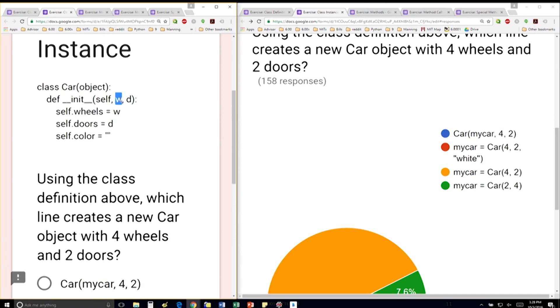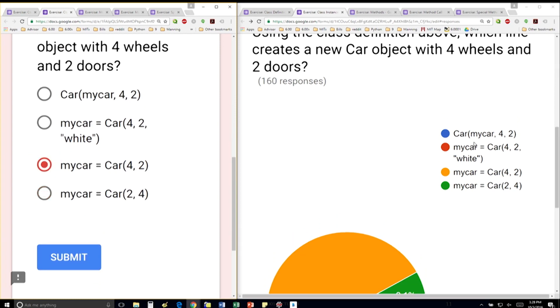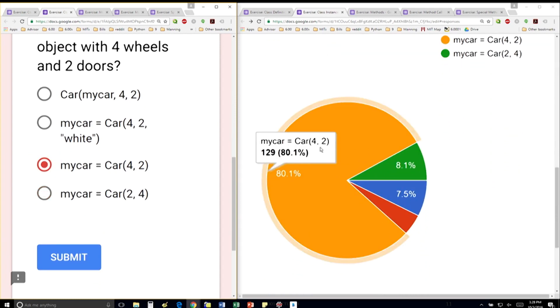The number of wheels is the first parameter, and the number of doors is the second one. So it should be this one here, car four comma two. That's this one. Perfect.